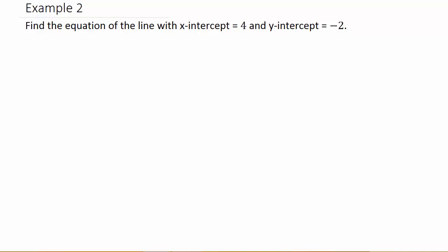So we've got the x-intercept is 4 and the y-intercept is negative 2. The x-intercept crosses the x-axis at 4 and it crosses the y-axis at negative 2.